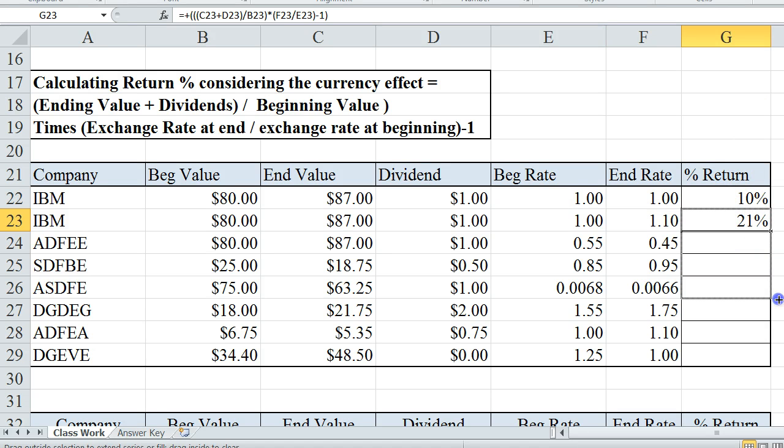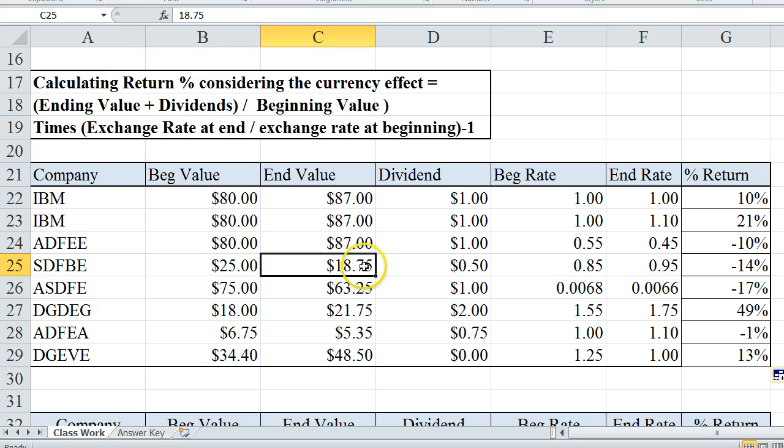And if we apply this all the way down, we'll see that in some cases it's favorable, in some cases it's negative. So in many cases, you can make money on your investment, and then lose money on the foreign currency side. Or the foreign currency side could generate profits. For example, here in this example, we actually lost money.